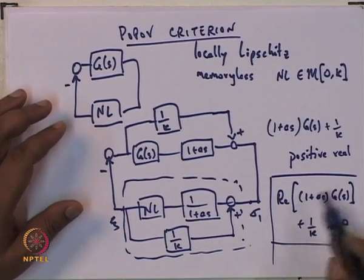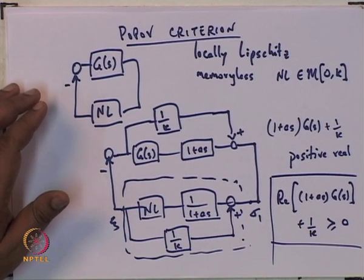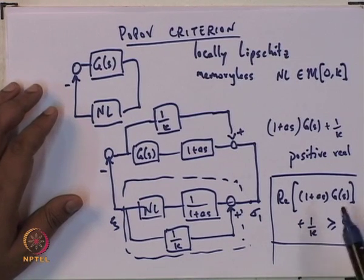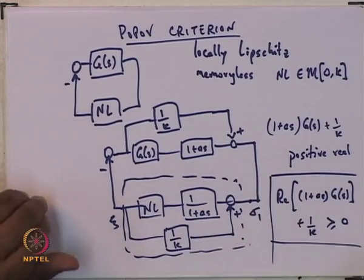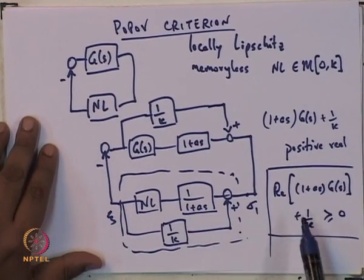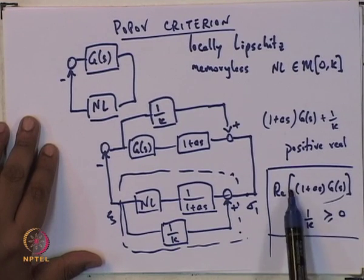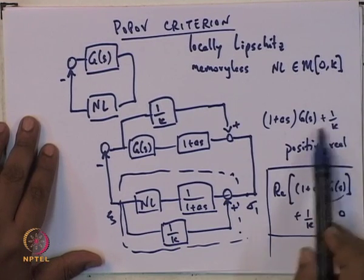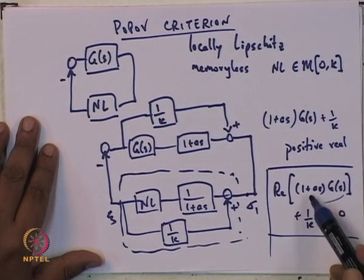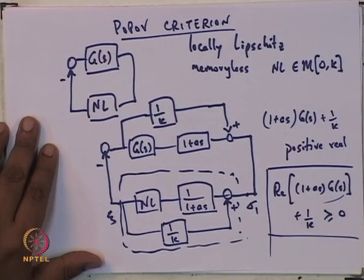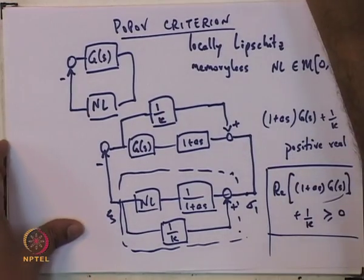How does one check the Popov criterion? Of course, some other things need to be discussed. If (1 + Aλ)G + 1/k is going to be positive real, then let us look at the transfer function G and make some comments about it.